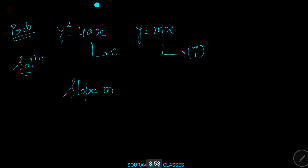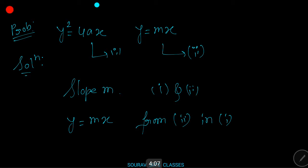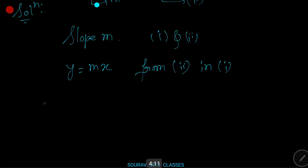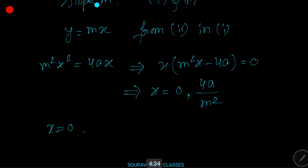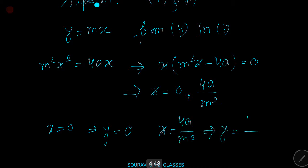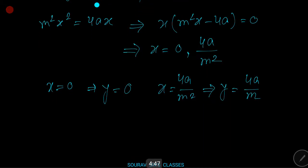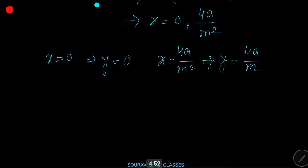To find the points of intersection, we solve simultaneously. Substituting y = mx into y² = 4ax gives m²x² = 4ax, which implies x(m²x - 4a) = 0, so x = 0 or x = 4a/m². Correspondingly, y = 0 or y = 4a/m. The points of intersection are (0, 0) and (4a/m², 4a/m).